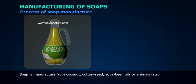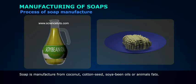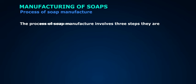cotton seed, soybean oils, or animal fats. The process of soap manufacturing involves three steps.